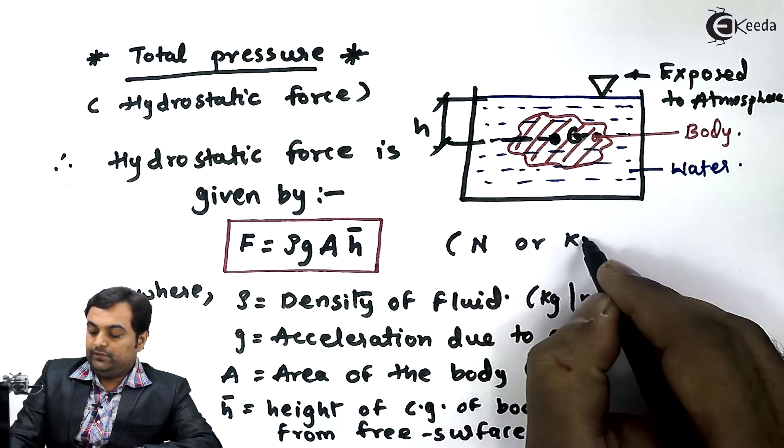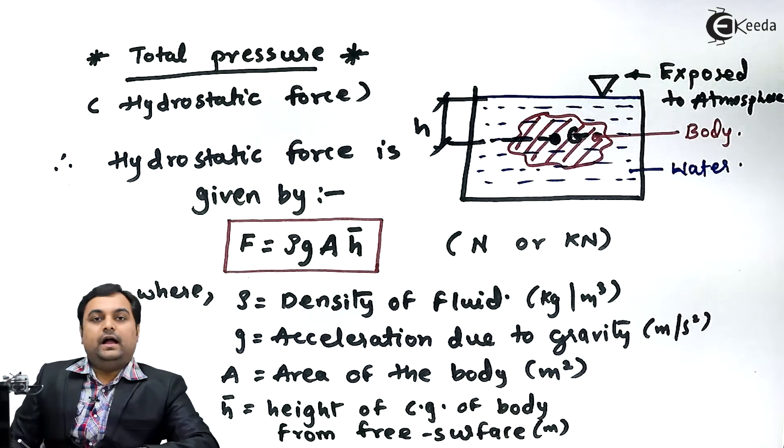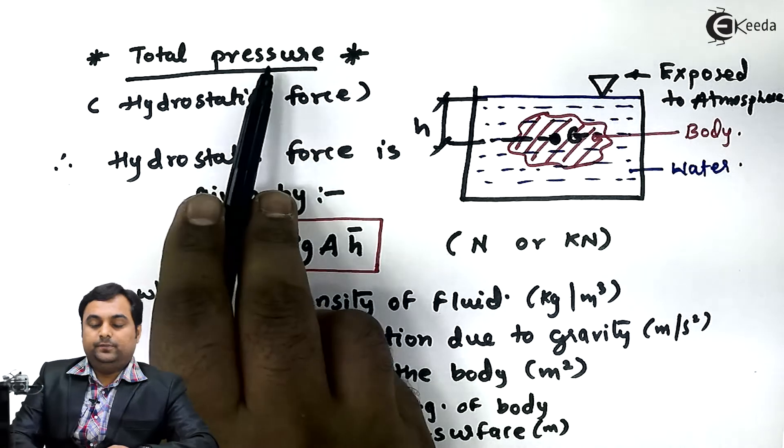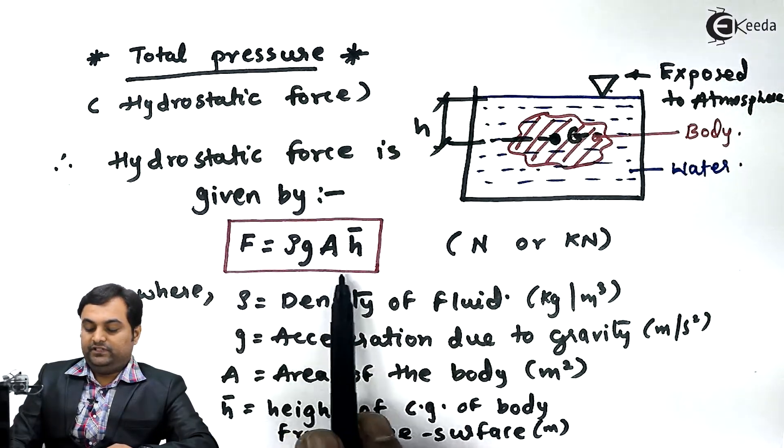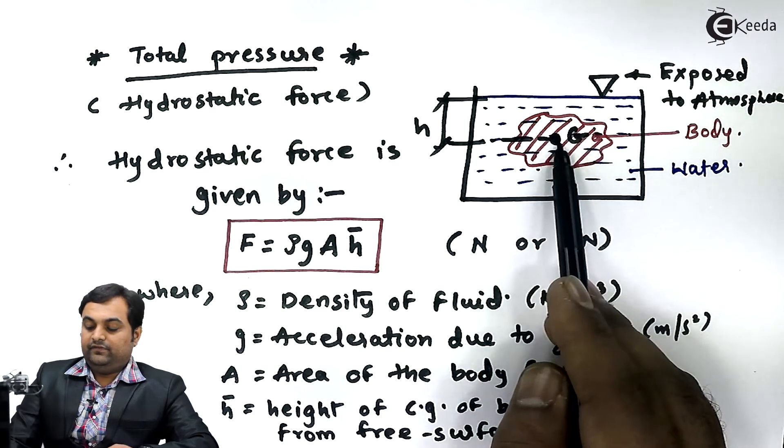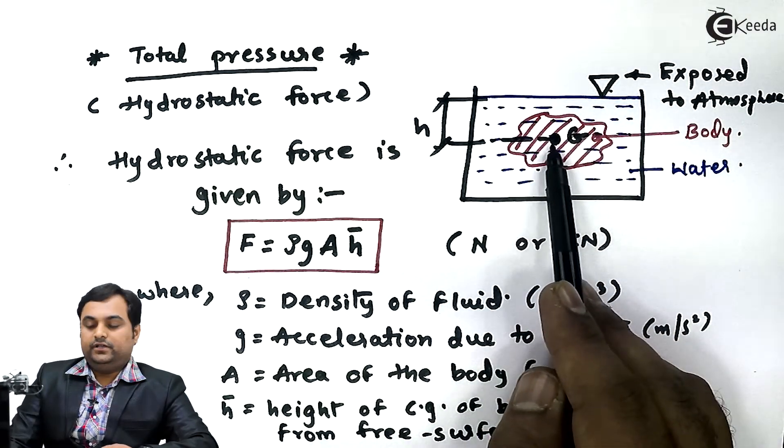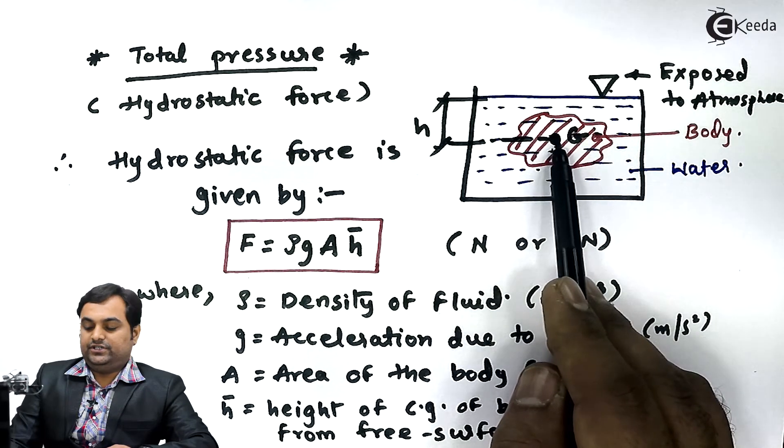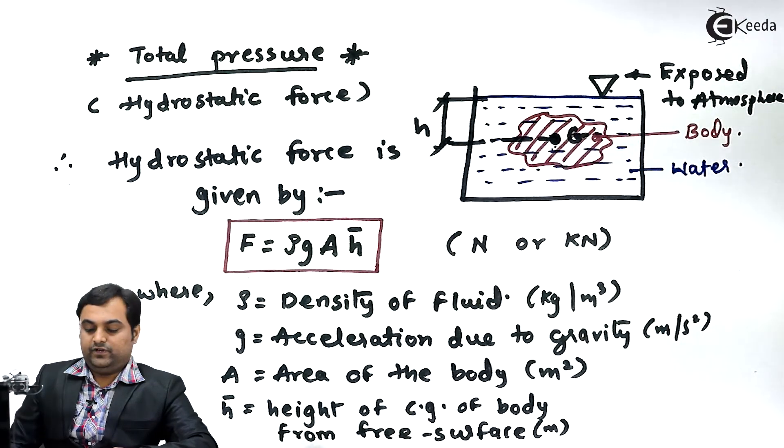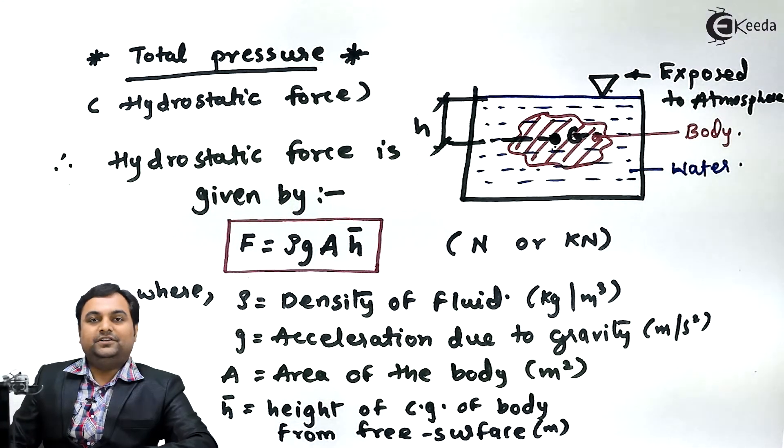As we have seen here in this video, total pressure was nothing but hydrostatic force. And we have written the equation of how to calculate the hydrostatic force. We have shown that on a body, being the centroid or the center of gravity, we should know the distance of that from the free surface of the liquid. So here we complete total pressure.